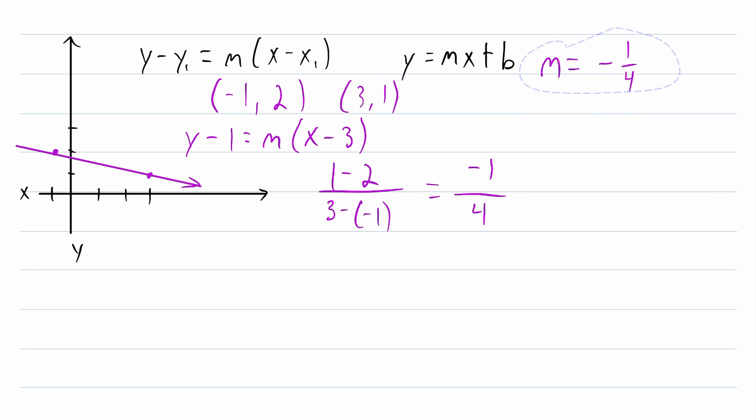So anyways, now we know the slope, which we will also need for slope-intercept form. Let's erase this math down here. And now we can finish writing our point-slope form equation. Instead of m, we actually have a slope of negative 1/4. And there is our point-slope form equation for the line passing through these two points.